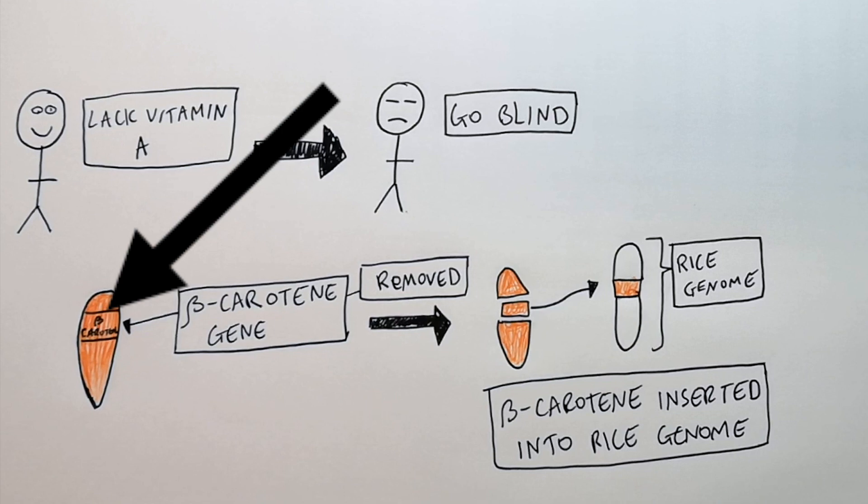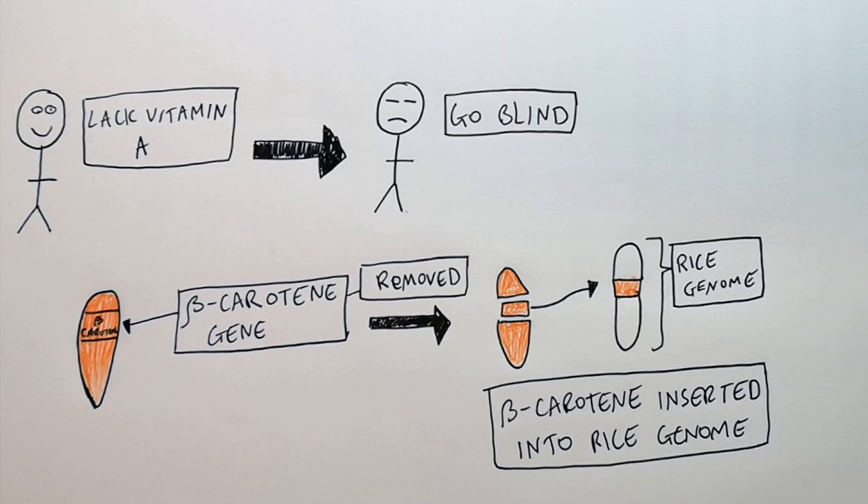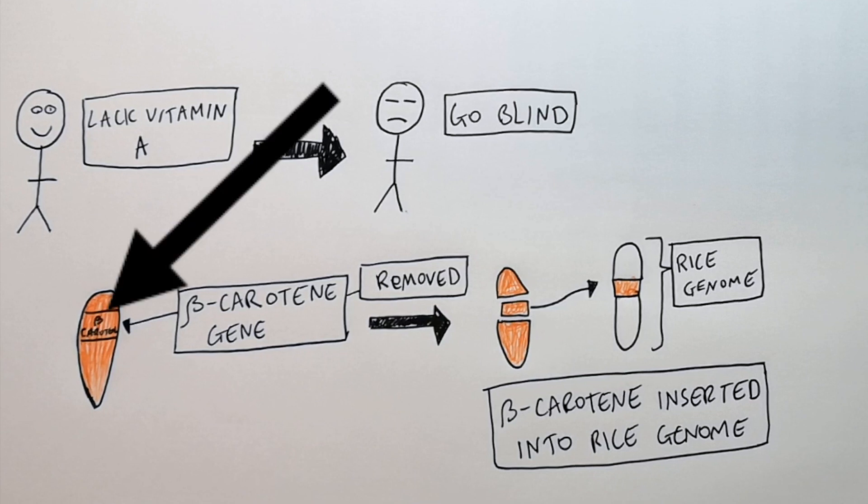So you can transfer the beta-carotene gene from one organism into rice, and that beta-carotene is then going to be used to make vitamin A, stopping that person from going blind.